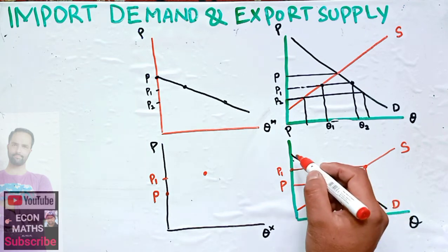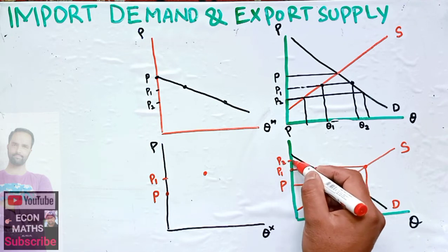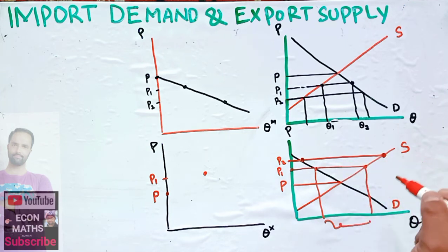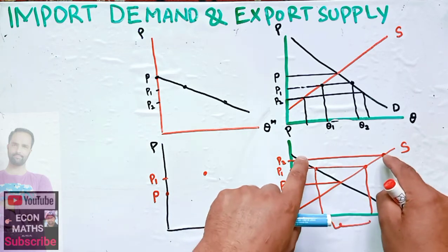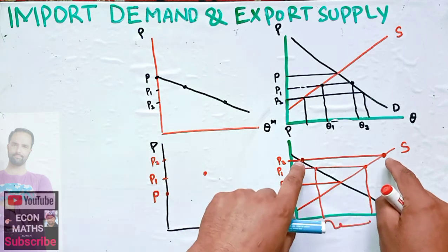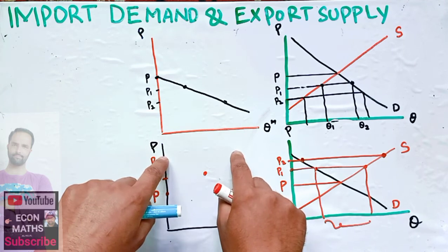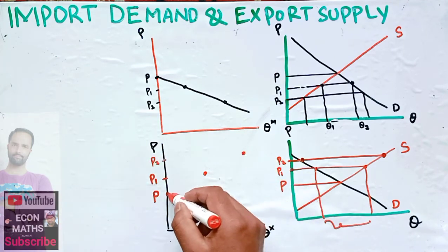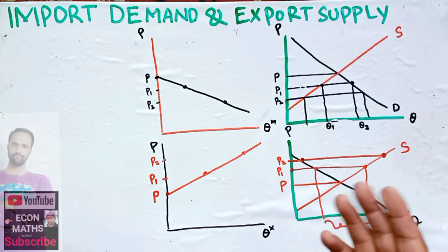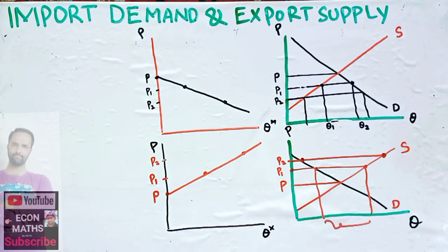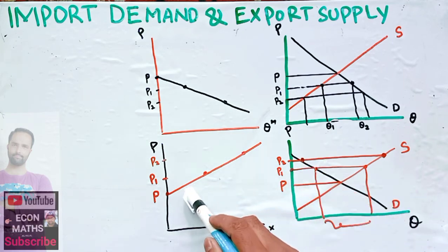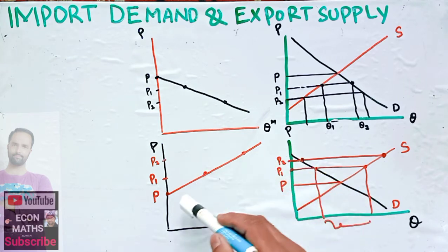Similarly, if price is P2 — higher still — demand is this amount and supply is greater, so we have a larger excess supply. Translating that distance to the export supply graph, corresponding to P2, gives another point further out. When we join these different combinations of prices and exported quantities, we get the export supply schedule.